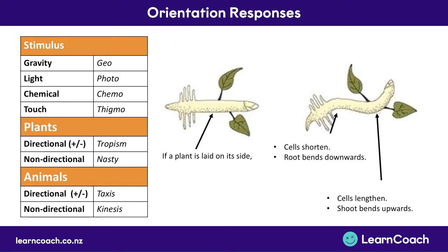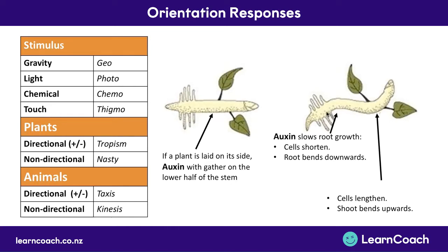Plants aren't that smart, so how do they actually know to do this? It's all because of a chemical called auxin — a hormone that gathers in the lower half of the stem. In root cells, auxin shortens or slows their growth. In shoot cells, auxin speeds up growth and lengthens the cells. That's how the roots grow downwards and the shoots grow upwards.